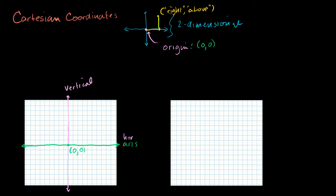Now let's say I have some point here. What is that point's coordinate? Its first coordinate is how far to the right — it's 1, 2, 3 to the right, so it's 3. And then how far above the origin? It's 1, 2, 3 up. So the coordinate is 3, 3. That is this point's Cartesian coordinate.